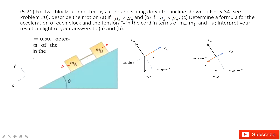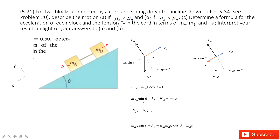We can write Newton's second law for each object. For object A in the y-component: normal force minus gravity·cosθ equals zero. In the x-component: M_A·g·sinθ minus tension minus friction equals mass times acceleration. The friction equals the coefficient times the normal force, and we substitute to get the final equation for A.